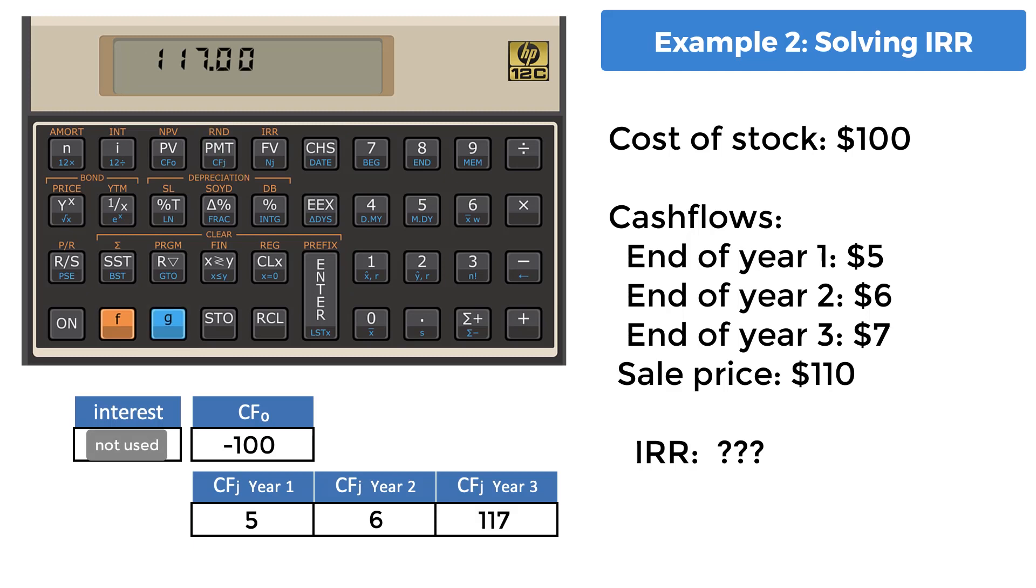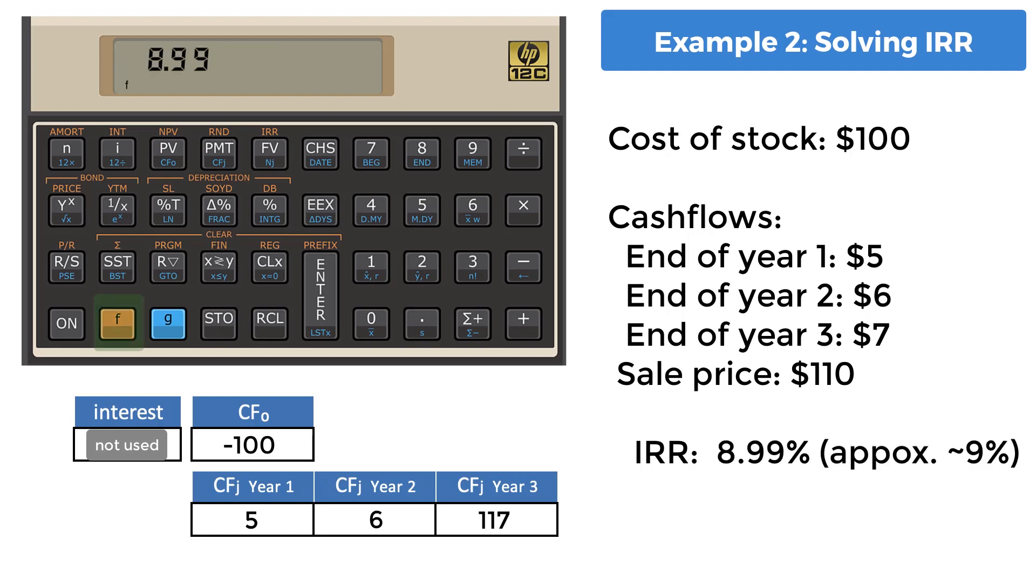Once the yearly cash flow amounts are entered, use the keys prefix F and the FV key on the top row. The IRR calculation is intensive and may take several seconds. The calculated value of 8.9934 can be rounded up to 9%.